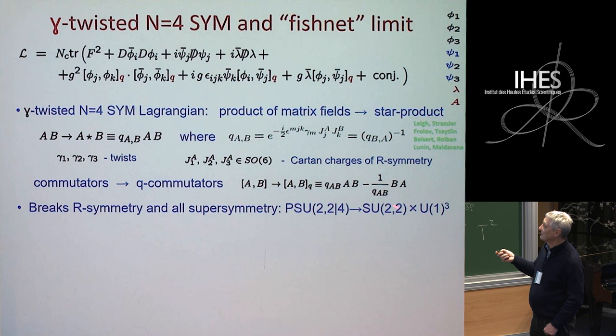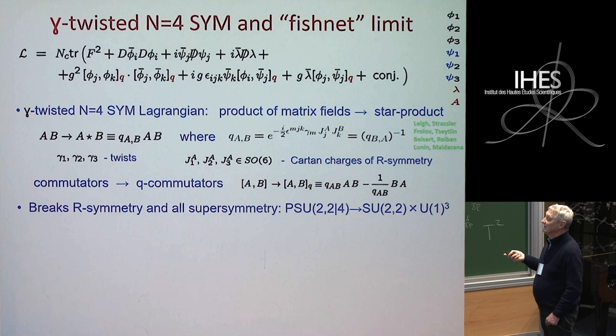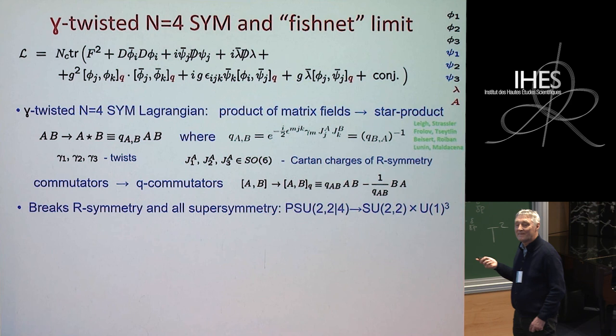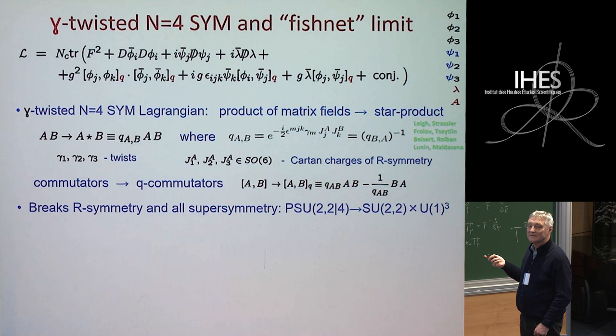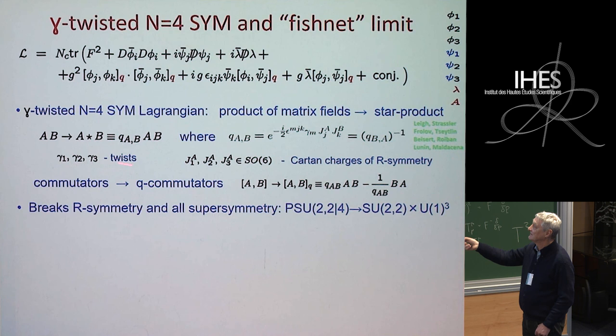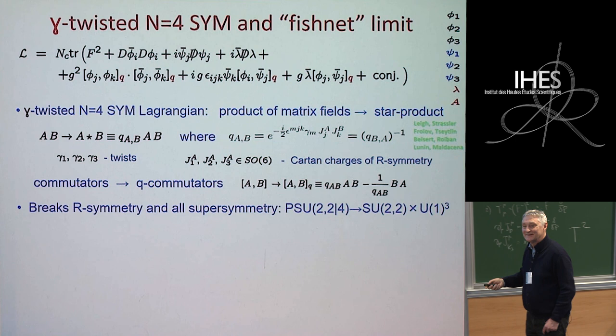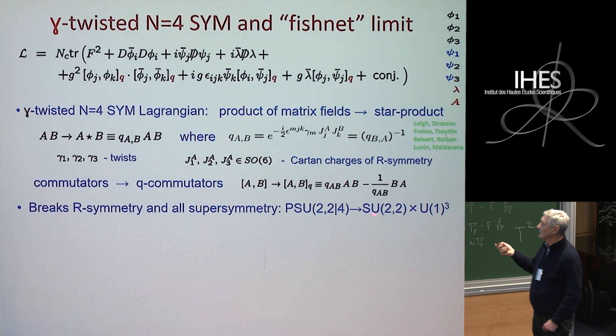So SO(6) breaks to U(1)^3, but conformal symmetry stays and supersymmetry is completely broken. To confirm my understanding: this deformation uses the Cartan of the R-symmetry group, and the rest of the symmetry group doesn't get quantized — just the Cartan. Yes, you just point a vector with coordinates in the R-symmetry group, which destroys R-symmetry down to rotations around Cartan generators, while conformal symmetry in principle stays.